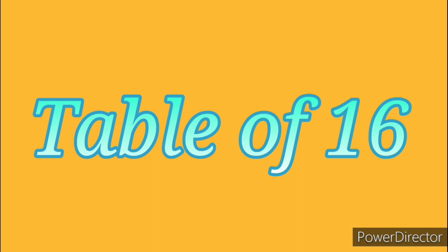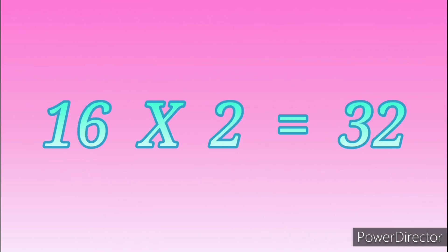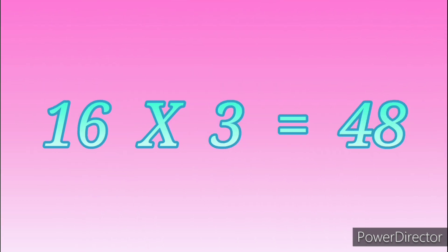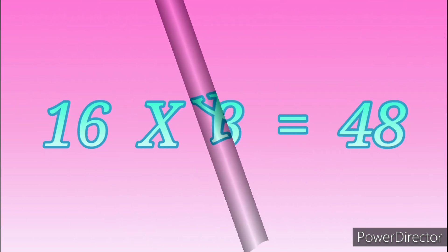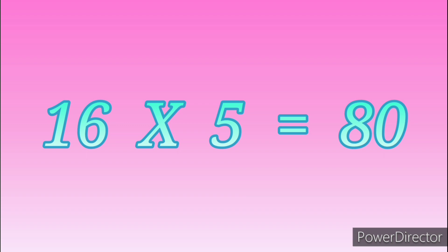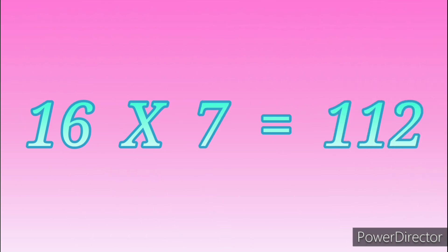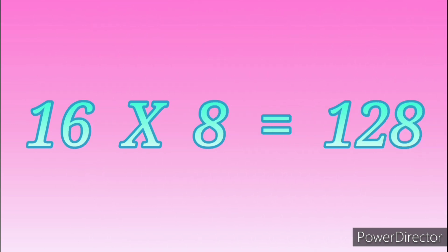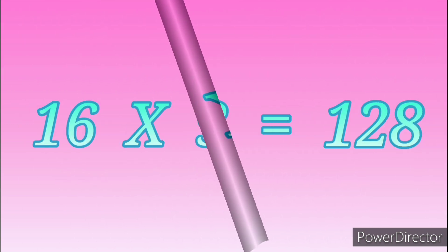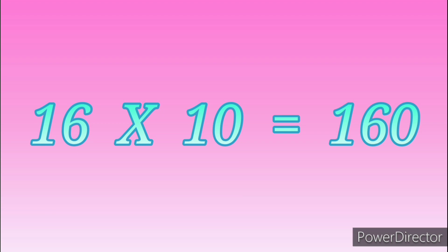Table of Sixteen: 16 ones are 16, 16 twos are 32, 16 threes are 48, 16 fours are 64, 16 fives are 80, 16 sixes are 96, 16 sevens are 112, 16 eights are 128, 16 nines are 144, 16 tens are 160.